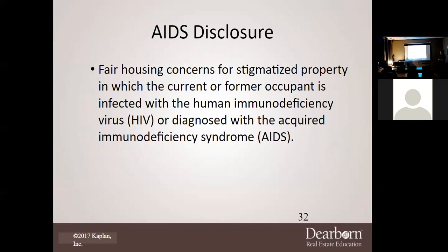In regards to AIDS disclosure, fair housing concerns stigmatized properties where the current or former occupant is infected with HIV or diagnosed with AIDS. Back when this was all happening, people thought you could catch HIV just by being in the same room with someone — similar to the early fears around COVID. People didn't know much about AIDS or HIV and were very cautious, which affected housing decisions significantly.